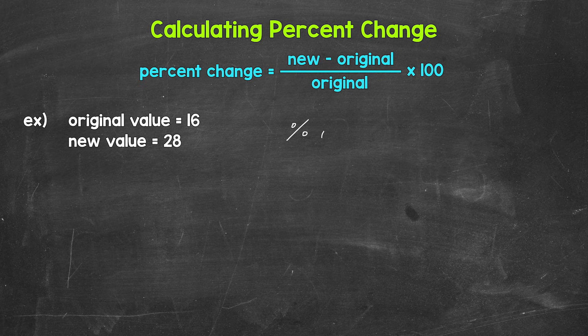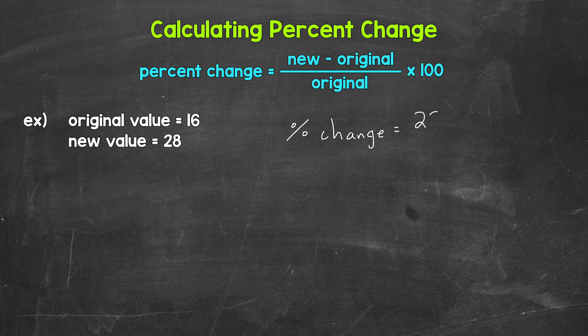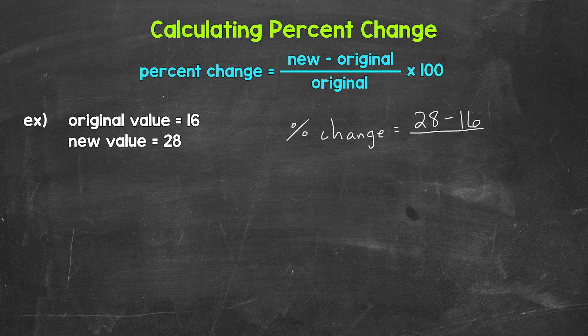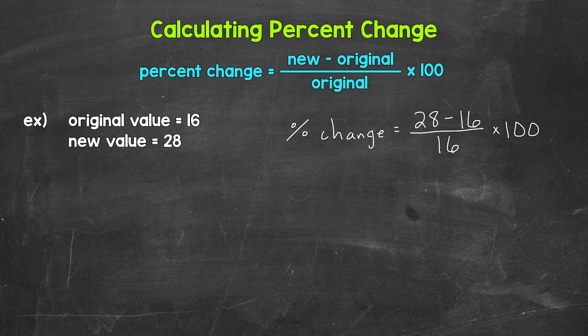So here, for percent change, we need to do the new value, 28, minus the original value, 16, divided by the original value, 16. And then we multiply by 100.